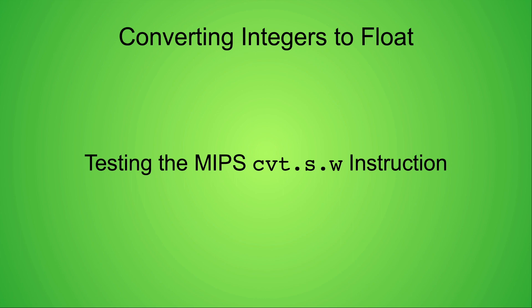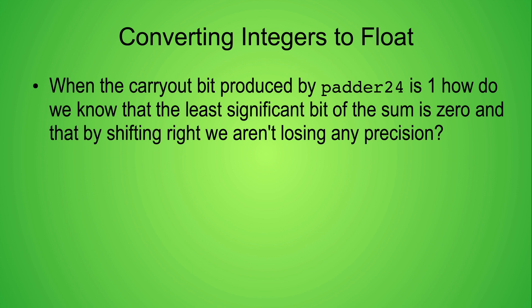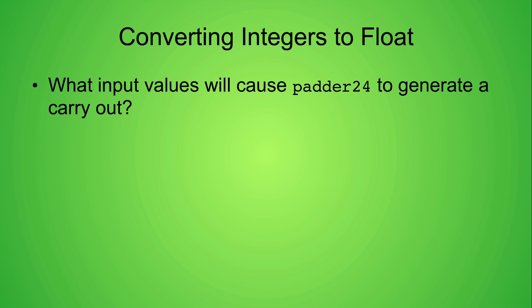Before that I want to review the study questions from the previous video. In the case that the carryout bit is 1, how do we know that the sum output by padder24 has a least significant bit of 0 and that by shifting the sum right we aren't losing any precision? To answer this we need to ask what input values to padder24 will produce a sum which generates a carryout bit of 1.